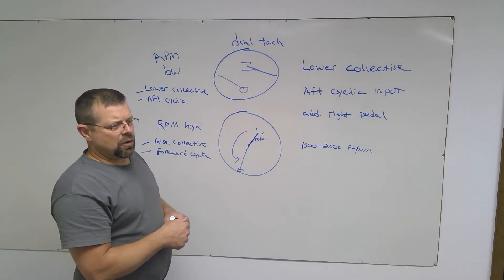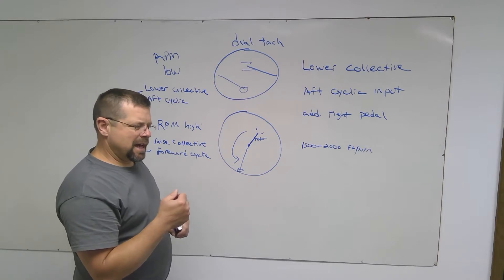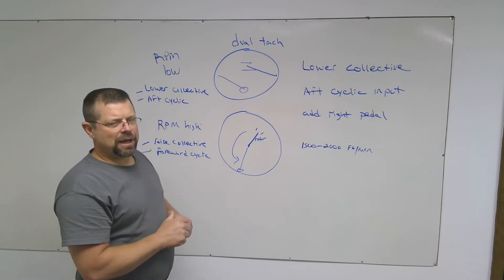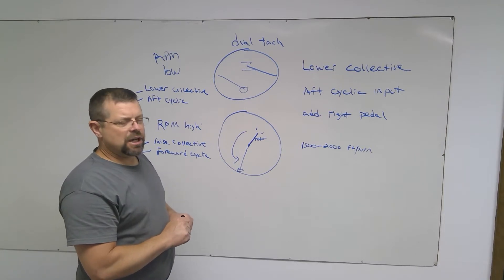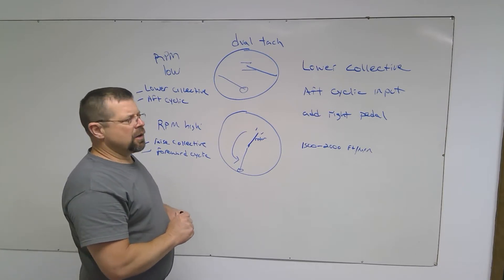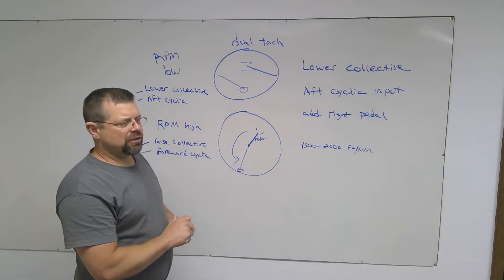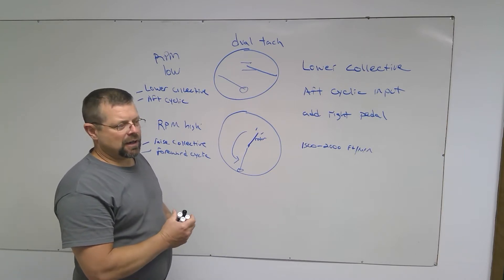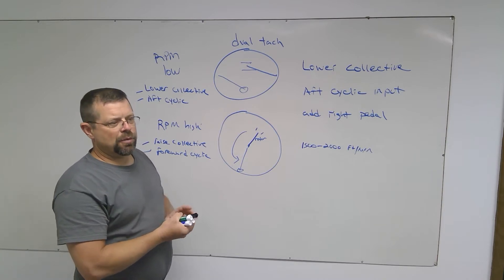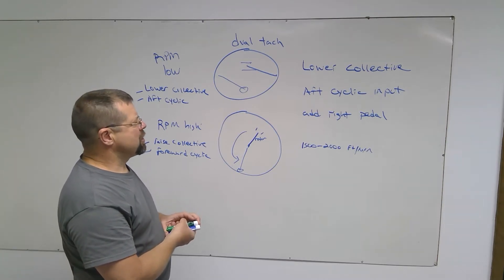So they get a feel for the fact that each control will make a difference in the RPM. And once that correlation is learned, both of them together—the collective and cyclic inputs together—are very effective in controlling the RPM during the autorotation.